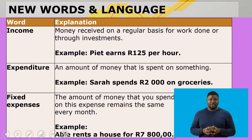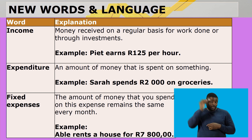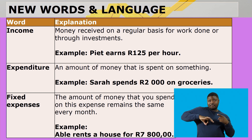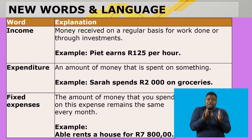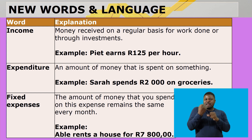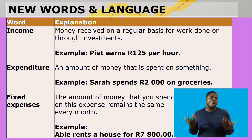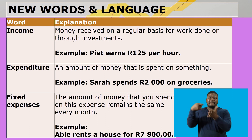The new words that we need to learn today: income — money received on a regular basis for work done or through investments. Expenditure — an amount of money that is spent on something. For example, Sarah spends two thousand rand on groceries.